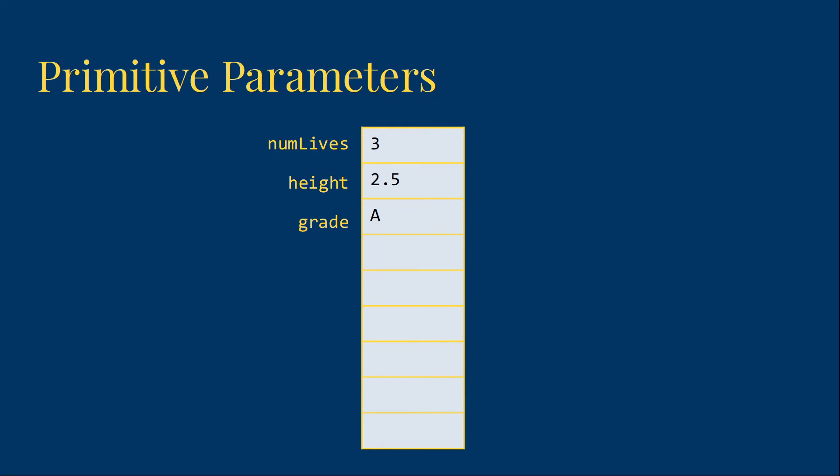For primitive variables, this is pretty straightforward. When I pass the parameter, I get a new location in memory that has a copy of the number, the letter, or the true or false value.